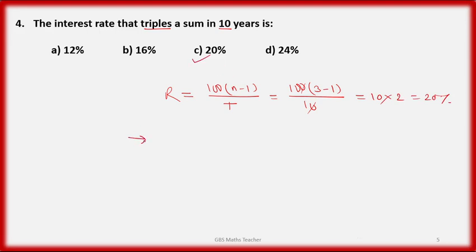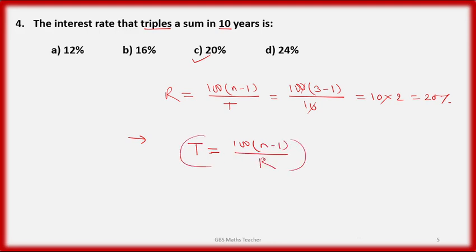One more thing: if we need to find the time, we rearrange the formula — t = 100 × (n − 1) / r — and you'll find the time in which the sum doubles, triples, or quadruples.